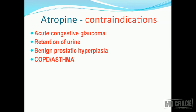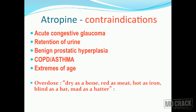Atropine is contraindicated in chronic obstructive pulmonary diseases because it dries respiratory secretions and forms thick tenacious mucus plugs in the respiratory tract, adding to patient discomfort. So we don't give it in COPD, bronchial asthma, bronchitis, and bronchiectasis. There are also hazardous effects in patients at extremes of age - very young and very old patients. Those are the contraindications for the use of atropine.